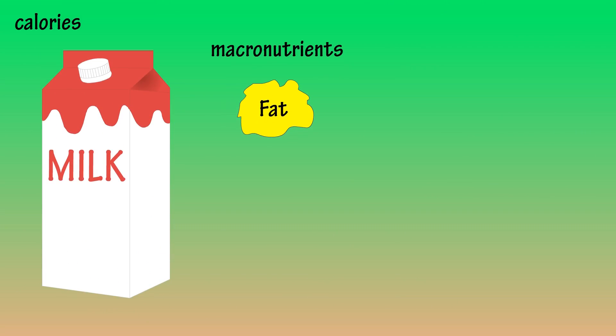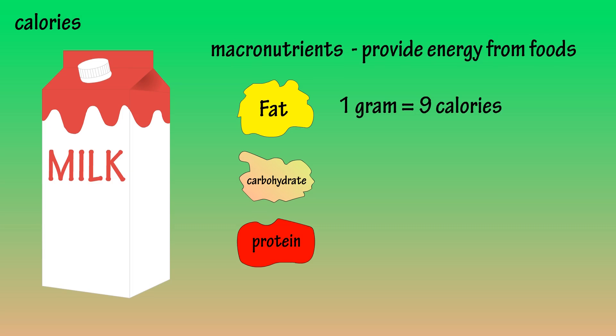The macronutrients, fats, carbohydrates and proteins, are what provide the energy from foods. Fat provides the most calories or energy, providing 9 calories per gram.